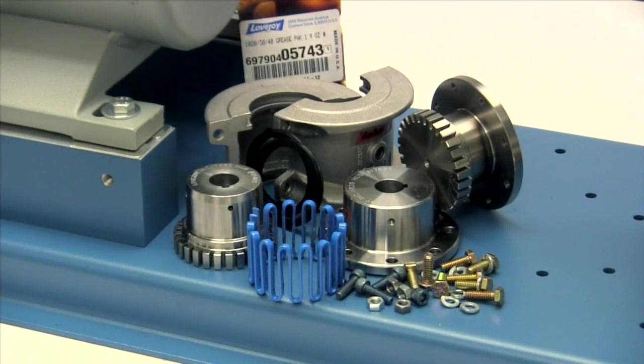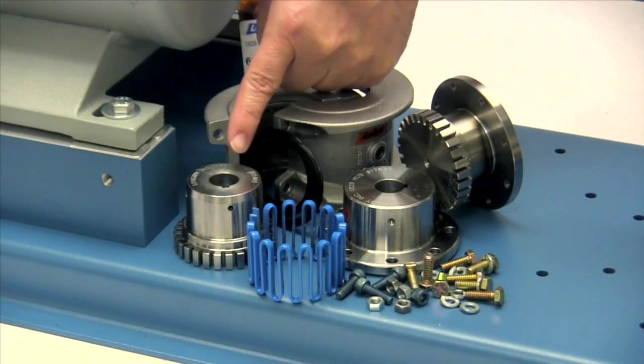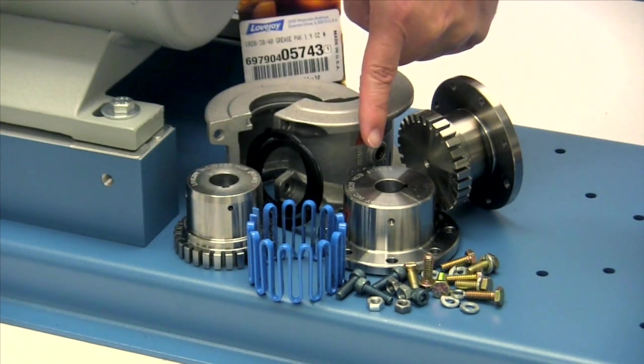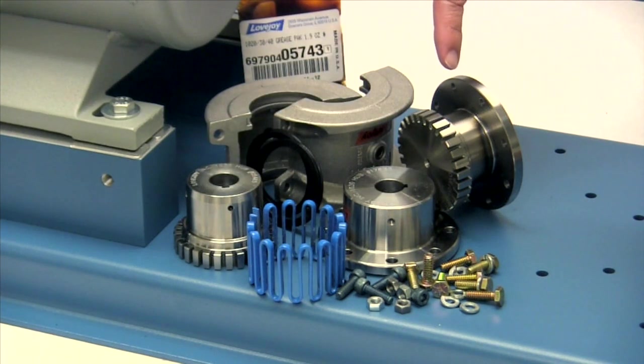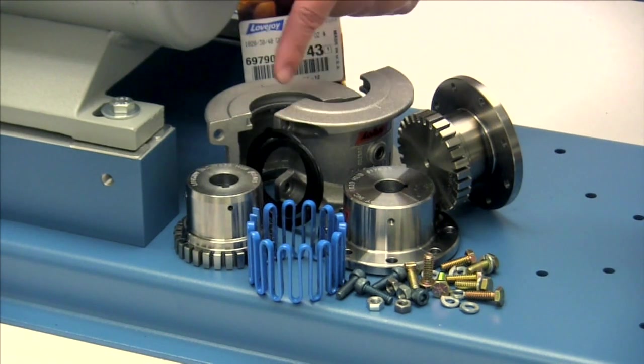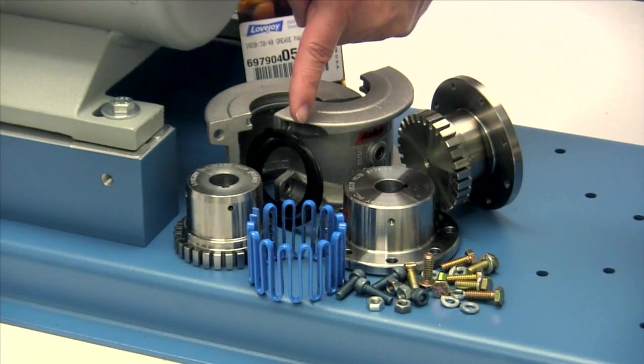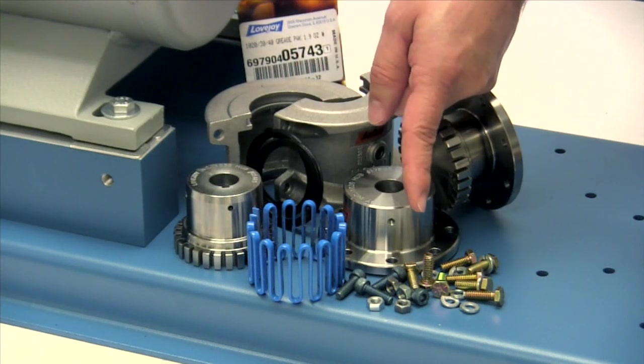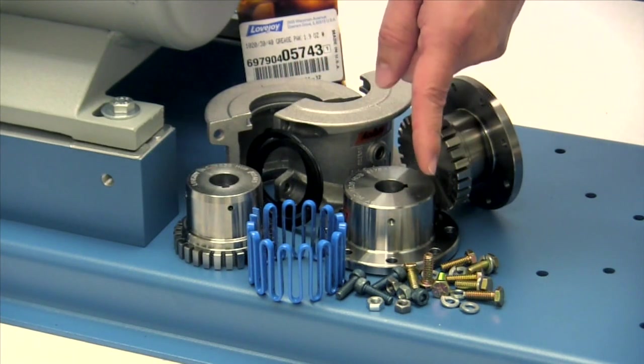The following components are provided with the purchase of your Lovejoy grid half spacer coupling with horizontal split cover. You should have one standard grid hub, one shaft hub, one spacer grid hub, one grid spring, two cover halves, two seals, and hardware for both the split cover and the shaft hubs.